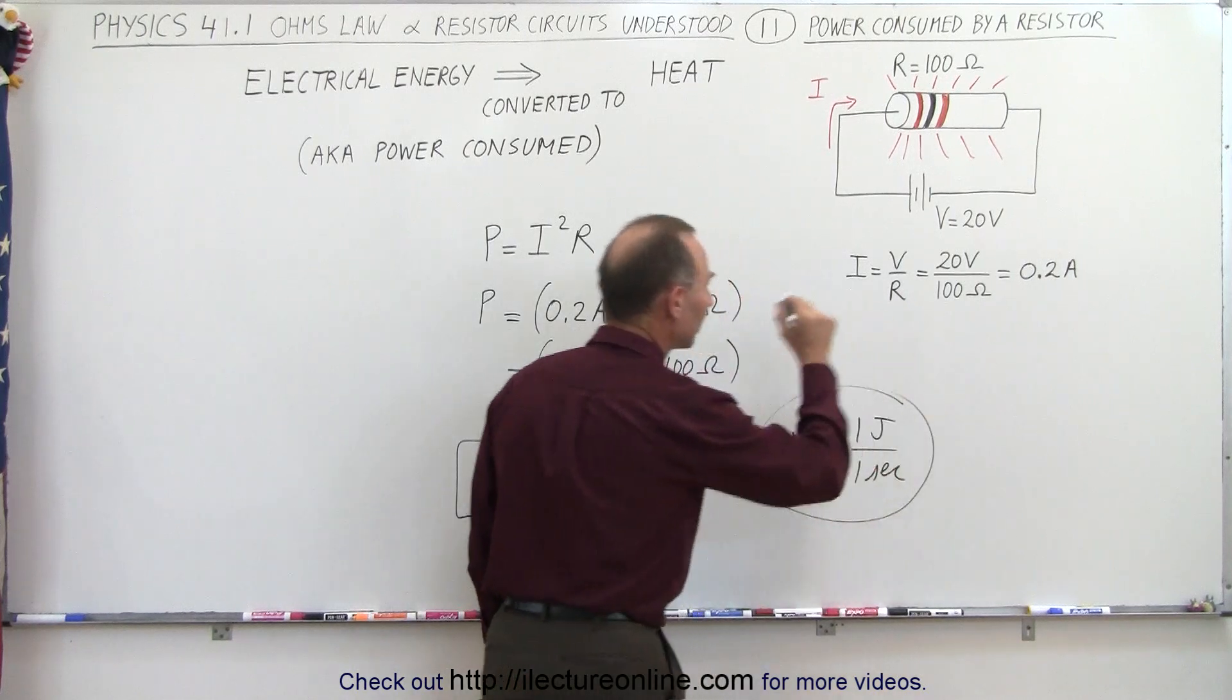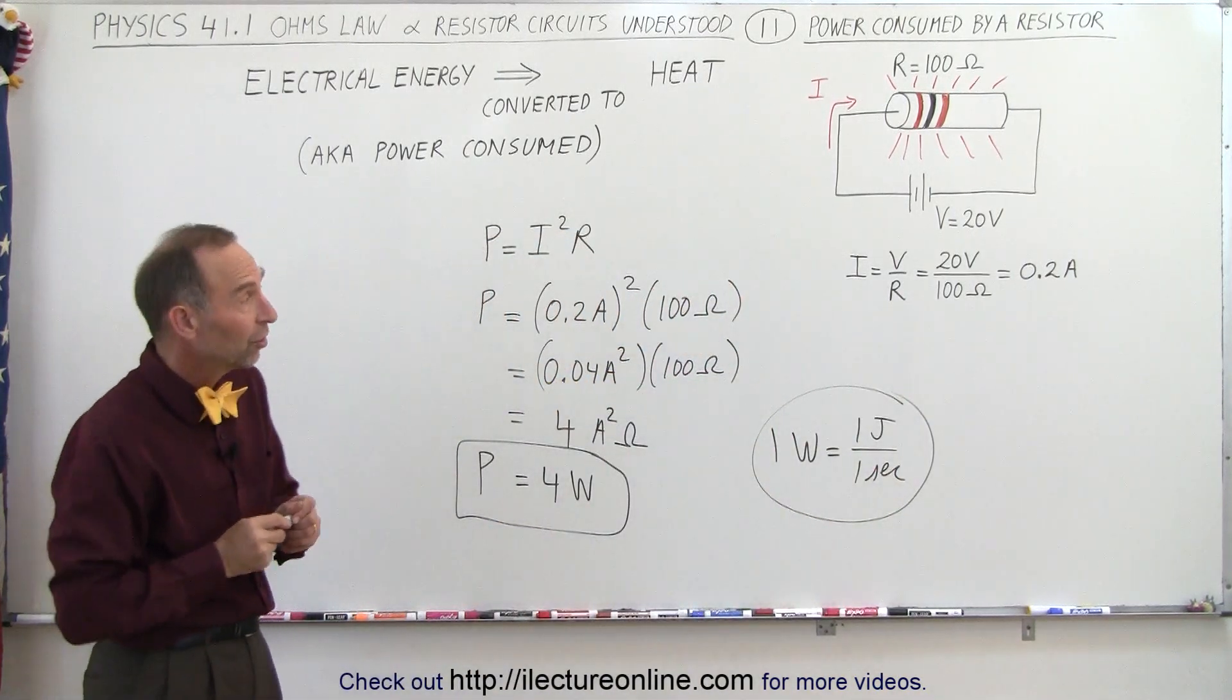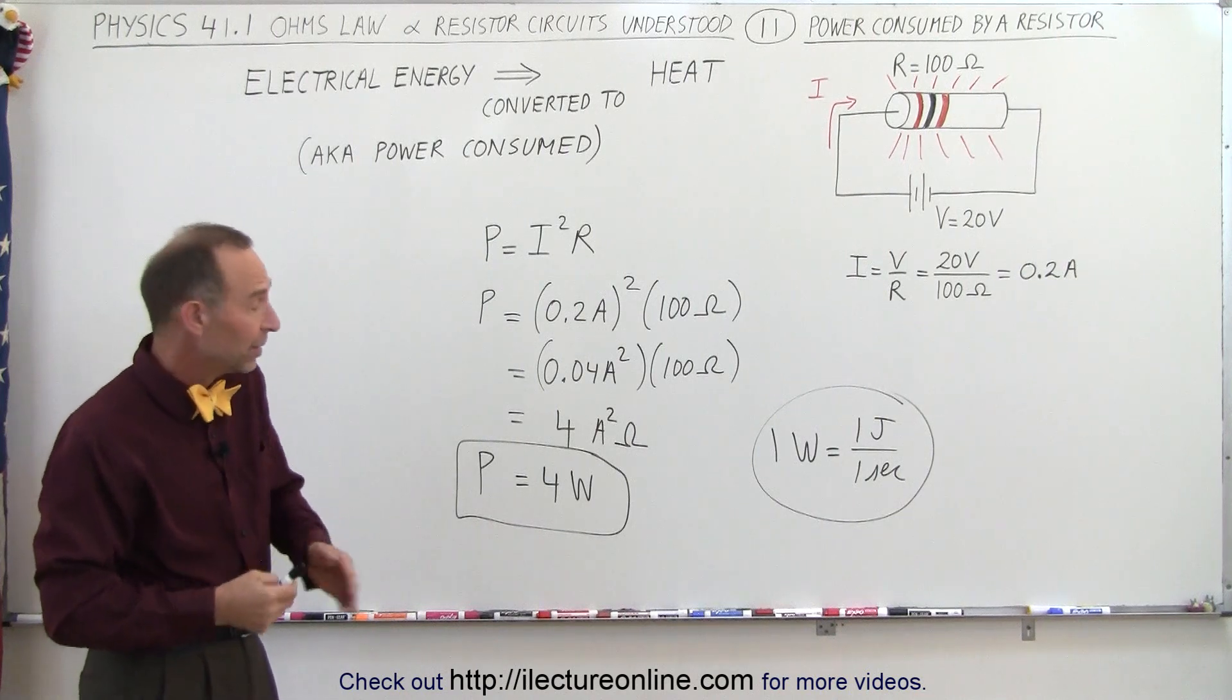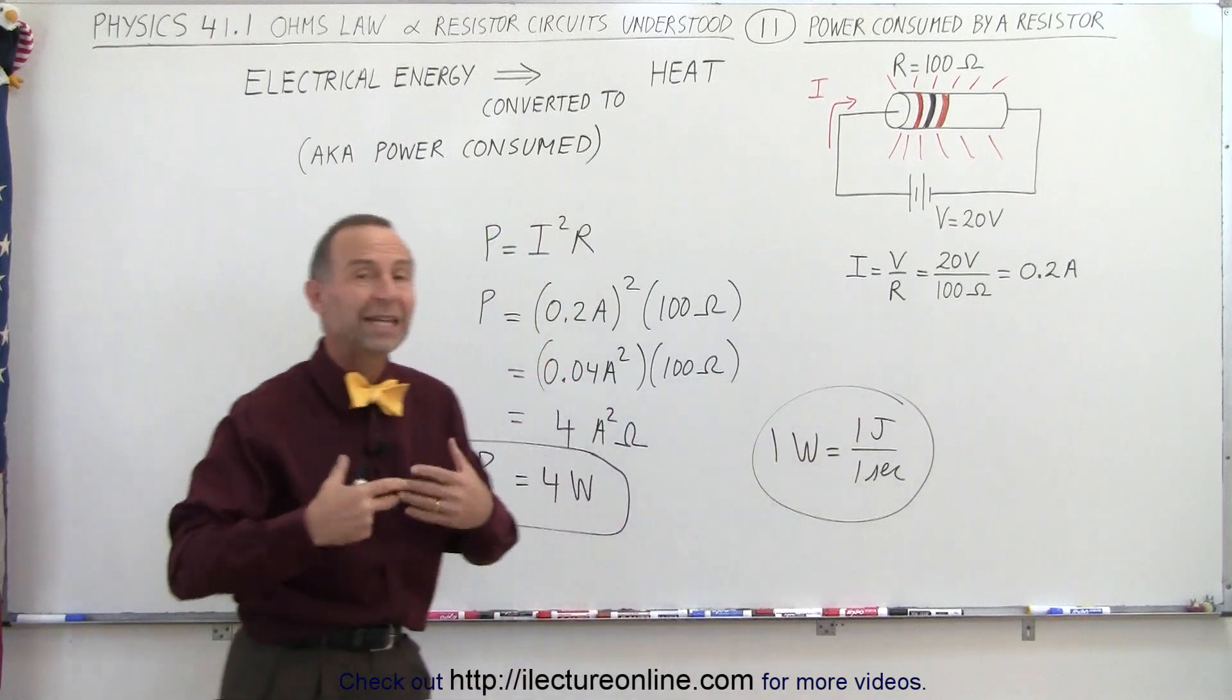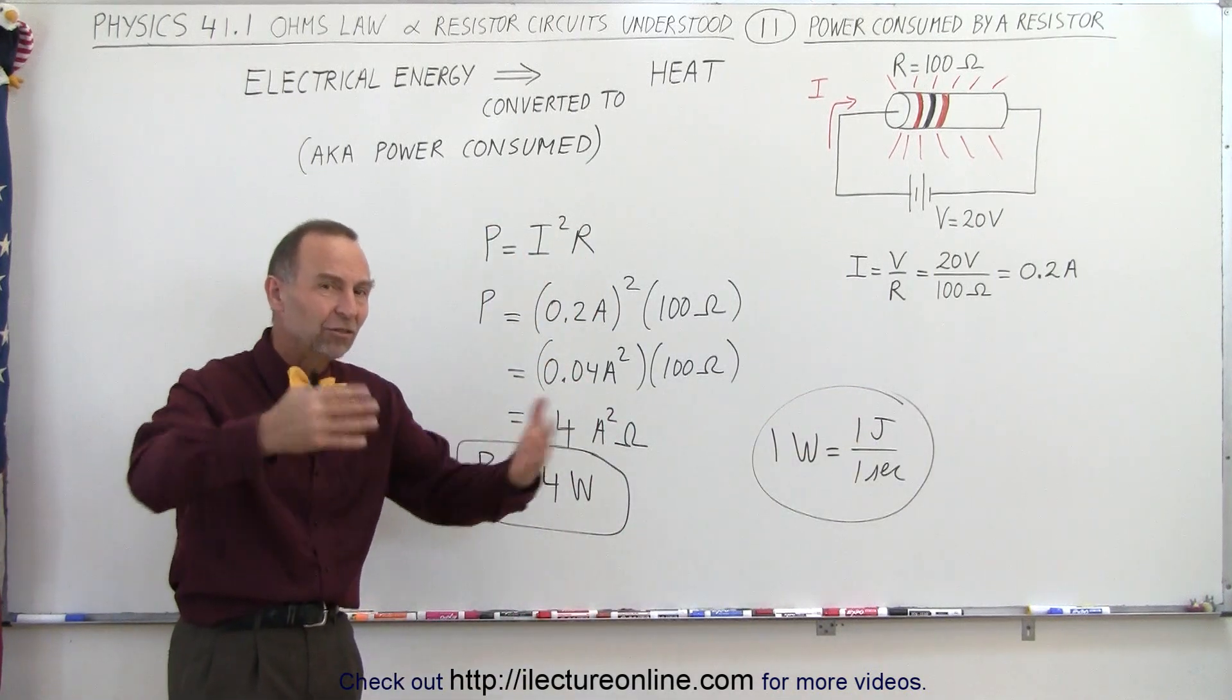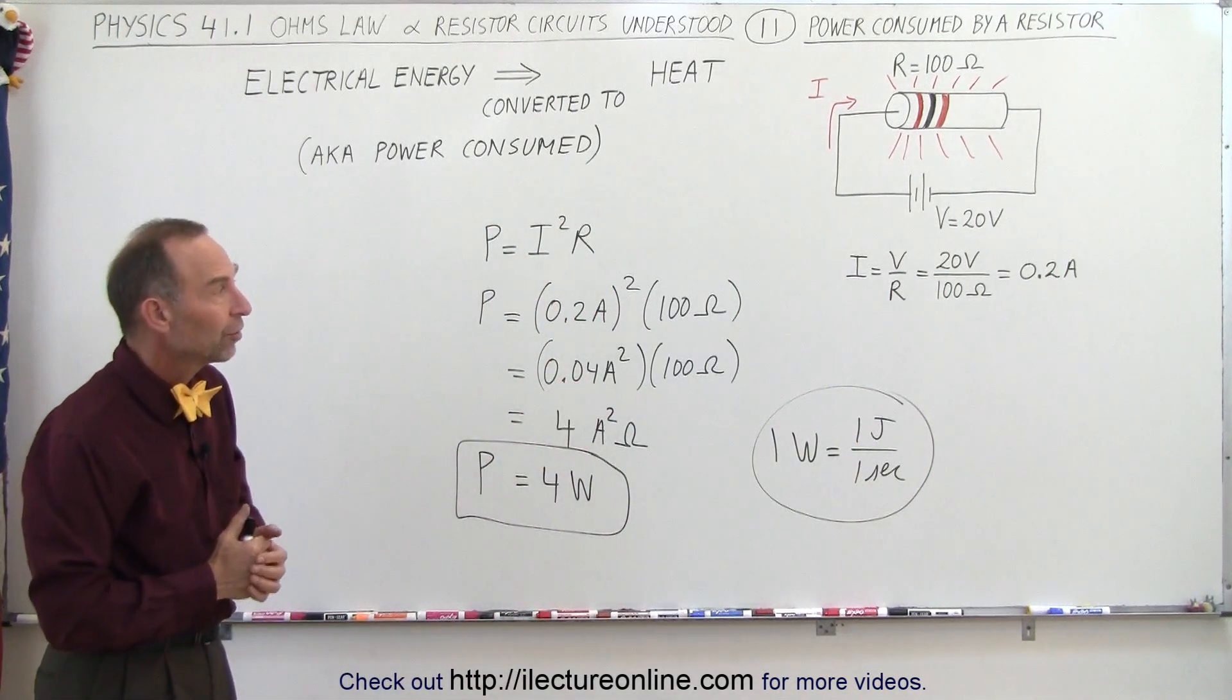So in other words, in this particular example, we can say that that resistor will consume or dissipate 4 watts of power. In other words, 4 joules per second of heat is generated and dissipated into the environment using that resistor.